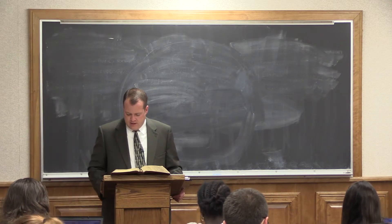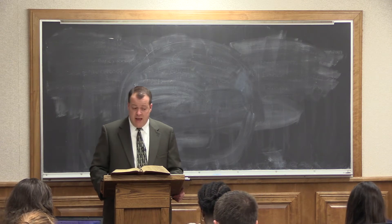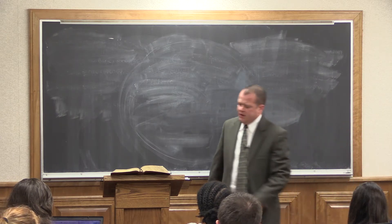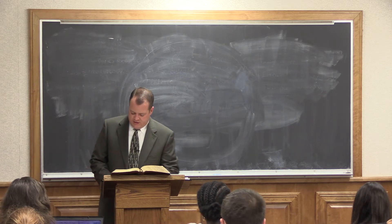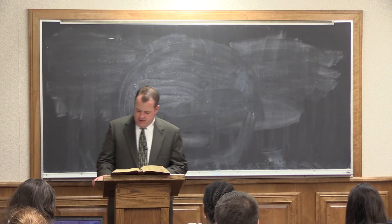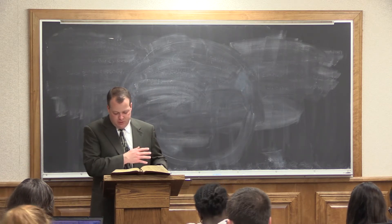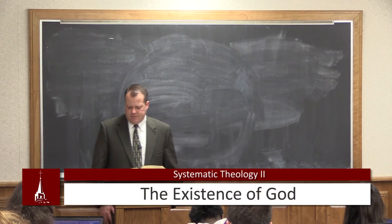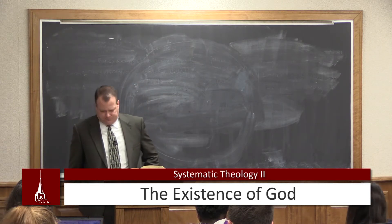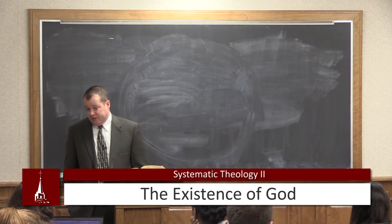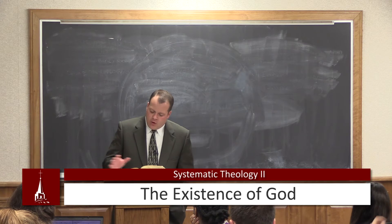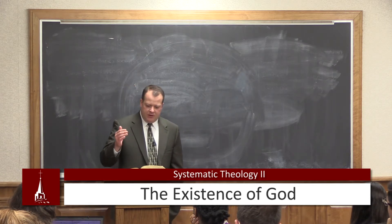Let's get right back to the doctrine of God. We looked at the definition from the negative standpoint. We looked at the non-Christian worldviews, starting with atheism, agnosticism, pantheism, polytheism, dualism, deism, and monotheism. And now let's look, Roman numeral number two, at the existence of God. Today we're going to use some well-known arguments for the existence of God. These are not the best defense for the existence of God, but sometimes these may be helpful as a starting point for someone who is an agnostic or an atheist or has rejected the idea of the one God of Scripture.